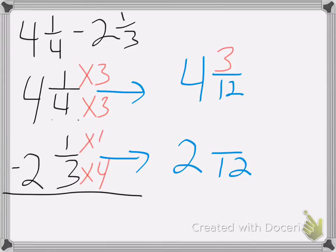3 times 4 is 12. I'm going to go to the top. So I get 4 and 3 twelfths minus 2 and 4 twelfths.